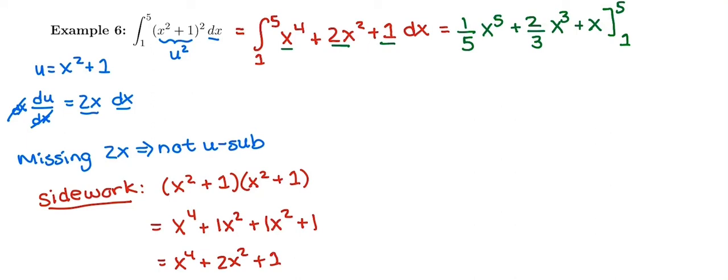So fundamental theorem of calculus says plug in your upper bound minus your lower bound. So I'm going to do 1 5th of 5 to the 5th plus 2 3rds of 5 to the 3rd plus 5, replacing all those x's with the upper bound, minus I'm going to plug in the lower bound as well.